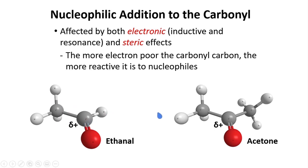Comparing it to acetone, there are two methyl groups here, and so there are two groups that will donate electrons, reducing the intensity of this positive charge. In our case, ethanal should be more reactive.